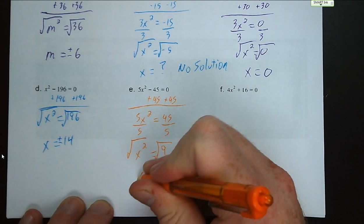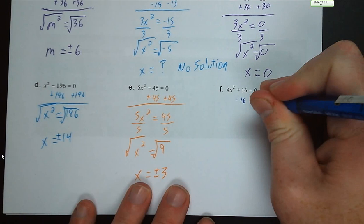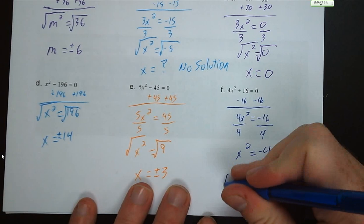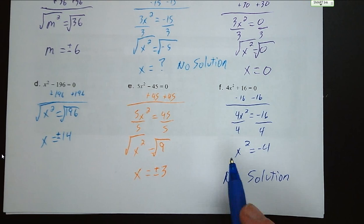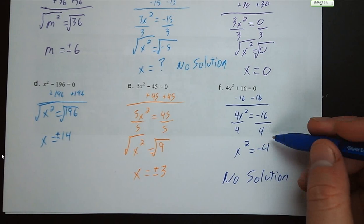Last problem: subtract 16 from both sides, giving 4x squared equals negative 16. Divide by 4: x squared equals negative 4. No solution. Do not make your judgment until you get your squared variable isolated — sometimes through multiplication or division you'll turn a negative into a positive. Then you look and see: this is negative 4, so this one is no solution.